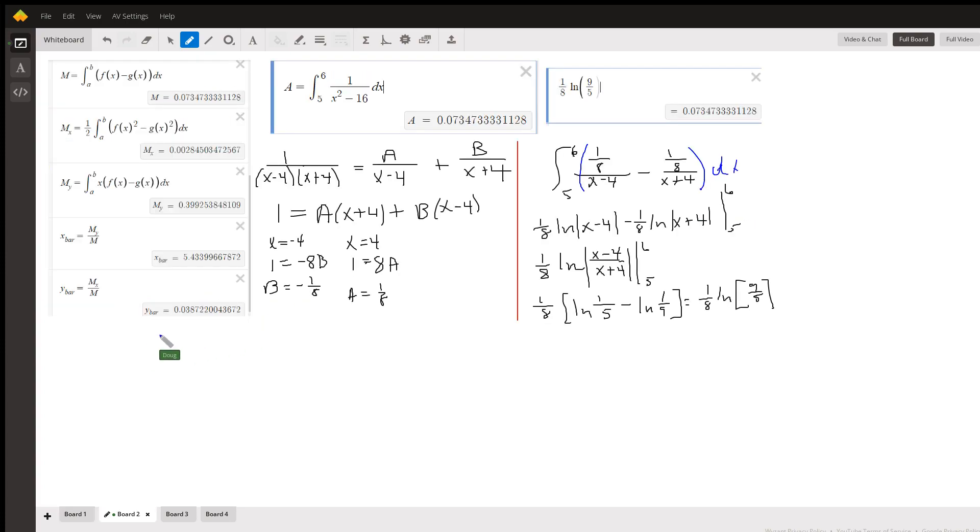We go to board 2. Here's a formula for finding x-bar, where m is the area between the two curves given by this expression right here.